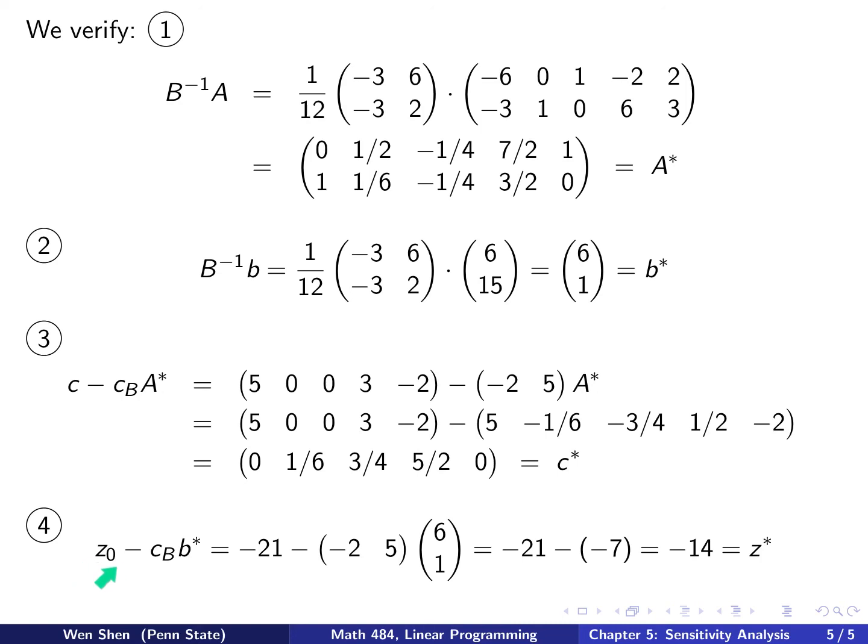Finally, for the z naught term: z naught minus c_B b star. That's the z naught, that's the c_B, and that is b star. You do the calculation of this times that, it gives you negative 7. Add this with negative 14, and that's exactly z naught star.